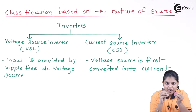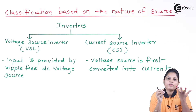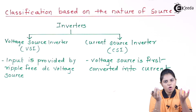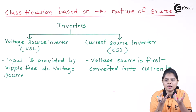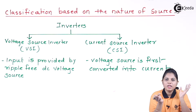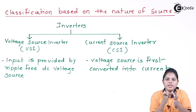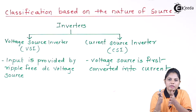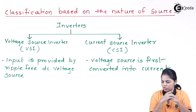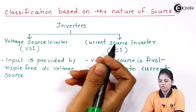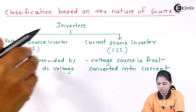If you want to have current as a source, you need to have a voltage and some resistance to generate that current source. So first the voltage is given, and that voltage is converted into current form, and then it is provided as the source for that particular inverter. These are the two types of inverters based on the nature of source.